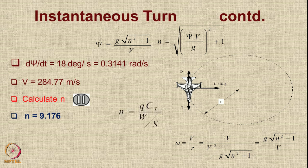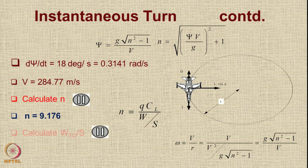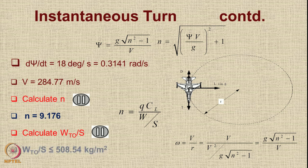The load factor n in a turn equals the dynamic pressure Q times CL divided by the wing loading W/S. Hence the load factor is directly connected to the wing loading. Putting in the values of n, Q, and CL and rearranging — remembering to include beta in the denominator to get the value at W_TO/S — we get the required W_TO/S to be less than or equal to 508.54 kg per meter square.